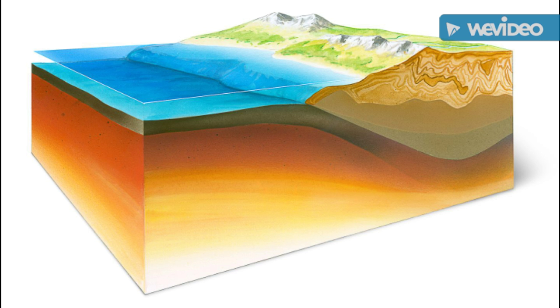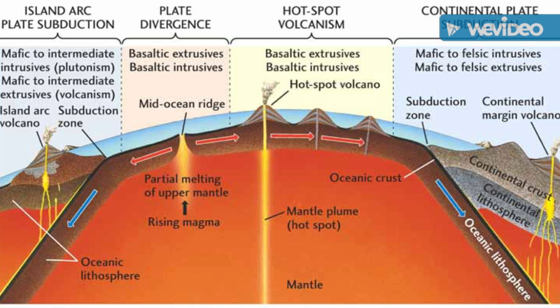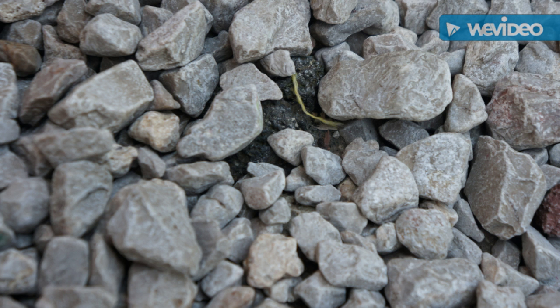The mantle is made up of silicon, oxygen, aluminum, and iron. The core is mainly made up of iron and nickel. It makes up about 30% of the Earth's mass. The outer core is 2,200 kilometers thick and is liquid, and the inner core is about 1,270 kilometers thick.